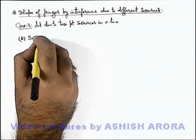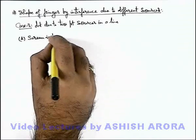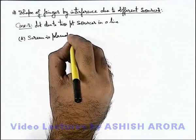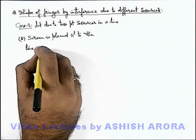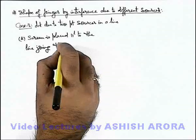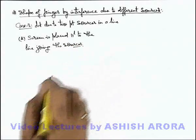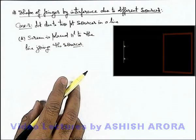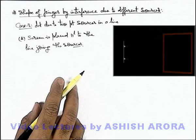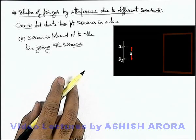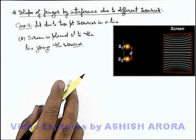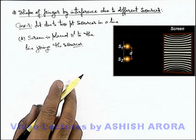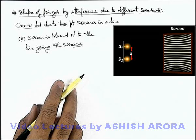The first situation is when the screen is placed parallel to the line joining the sources. In this realistic situation, on a flat board if there are 2 point sources placed and a screen is placed at some distance from these point sources, when the sources are switched on, if these are monochromatic sources, hyperbolic shaped bright and dark fringes are obtained on the screen.